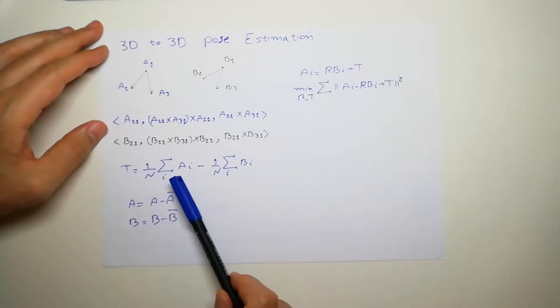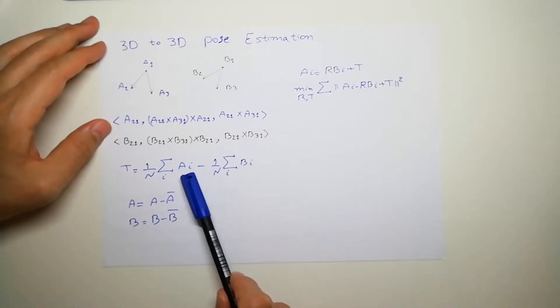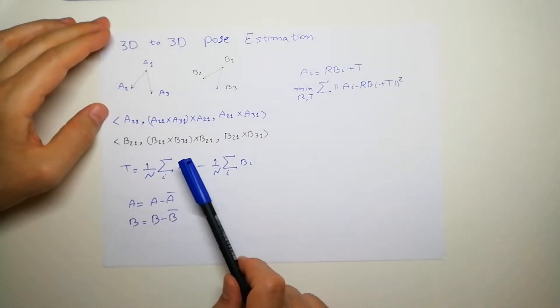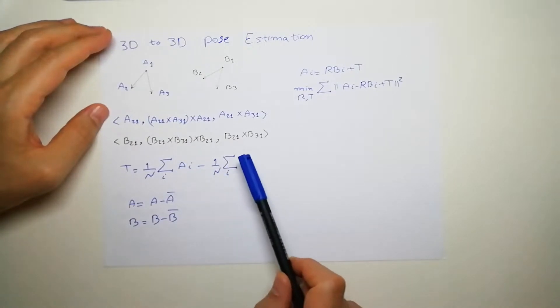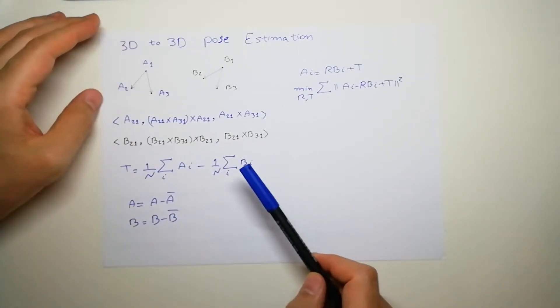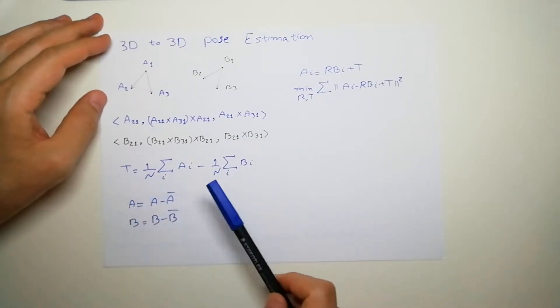You just compute the average. So every i has x, y, z, x1, y1, z1, x2, y2, z2 and so on. You sum them and find the average for the x, y and z here and x and y and z here. And you just divide by the number and subtract them which gives you the translation.